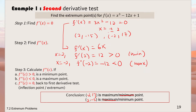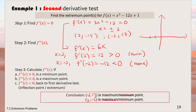One application of finding maximum and minimum points is to sketch a graph. For f(x) = x³ - 12x + 1, we know (-2, 17) is a maximum and (2, -15) is a minimum. We plot these two points, draw a sad-face curve at the maximum and a smiling-face curve at the minimum, join them up and extend slightly to get the shape of the curve.